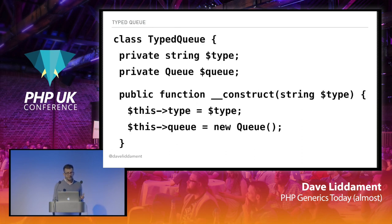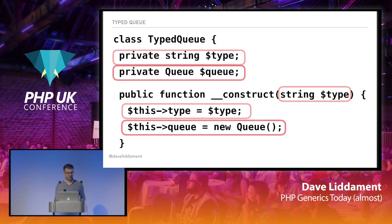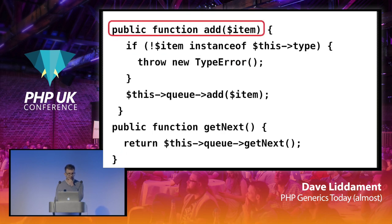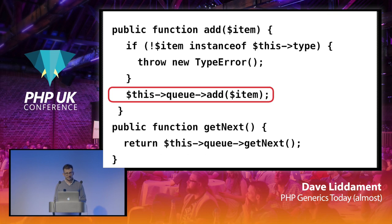One way around this is we could make a typed queue class. When we construct it, we record the type of object we want to store in the queue and construct an instance of the queue behind the scenes. Then in our add method, the first thing we do is check that the item being added is of the correct type. If it isn't, we throw a type error; if it is, we add it to the queue.